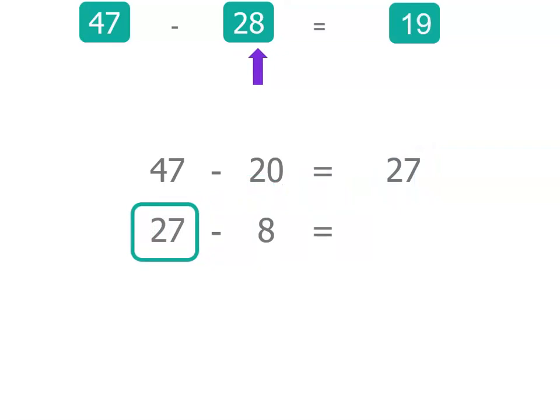But the 8 is bigger than the 7 that we have in the unit space, so we're going to bridge to 10. We're going to go back to 20 and then keep going. So 27 minus 8, we're going to do it in two parts. We're going to work out 27 minus 7 because that takes us to 20.